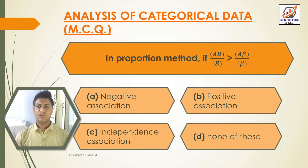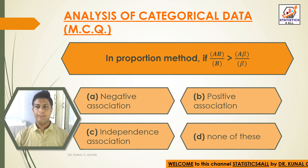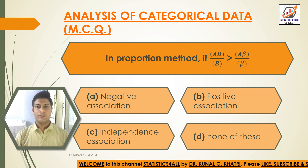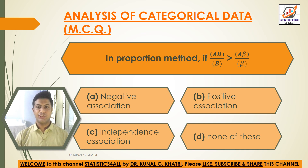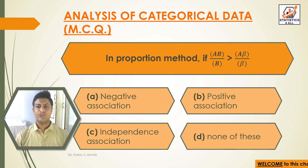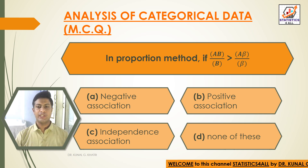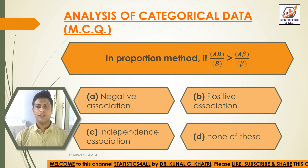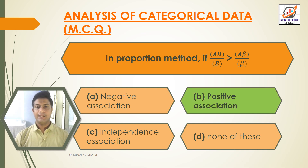In the proportion method, if AB divided by B is greater than Aβ divided by β — options are: option A: negative association, option B: positive association, option C: independence association, option D: none of these. The answer is option B, that is positive association.